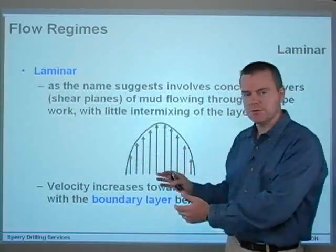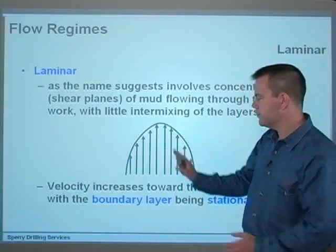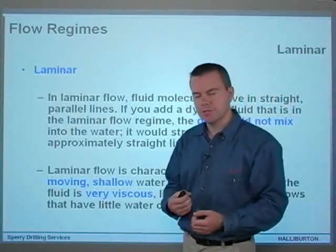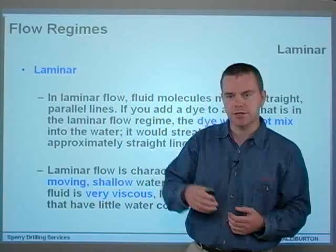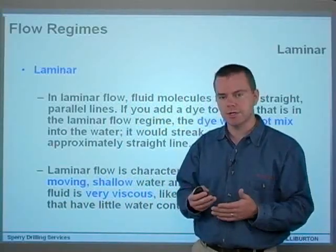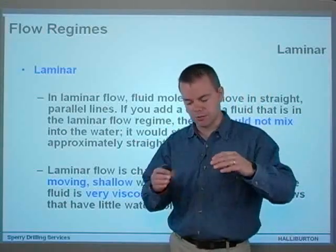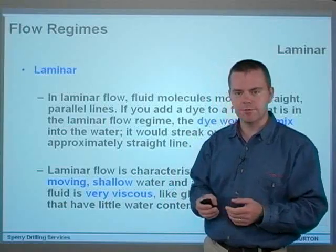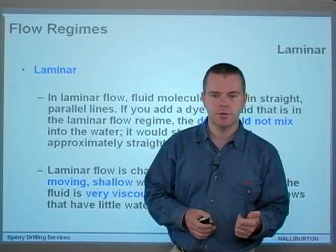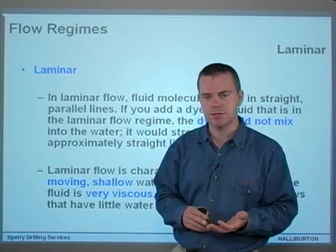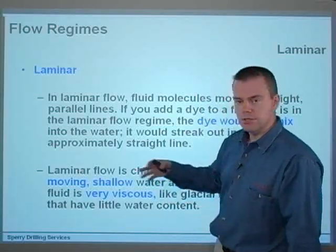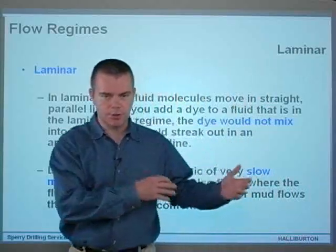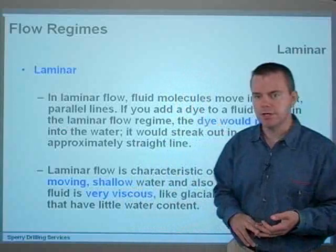Looking at that in two dimensions, it's a parabolic flow profile with virtually stationary fluid on the outside and the fastest area in the center. In laminar flow, fluid molecules basically move in straight parallel lines, and if you added a dye into that fluid, the dye wouldn't actually mix — it would streak out in approximately a straight line, following those laminae and not intermixing between the layers. Laminar flow is characteristic of slow-moving shallow water, and also flows where the fluid is very viscous, like glacial ice or mud flows with very little water content. So it's dependent on geometry, velocity, and viscosity — if you vary these things, you vary the flow regime.